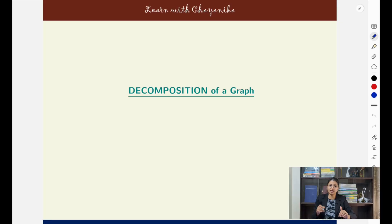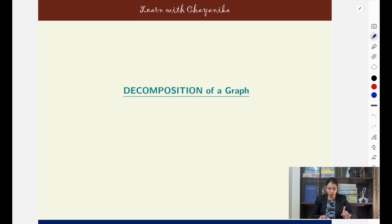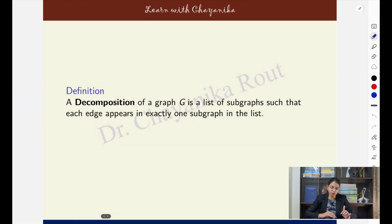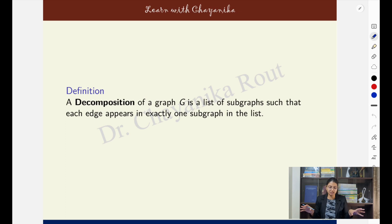So let's see the definition and some examples. A decomposition of a graph is basically a list of subgraphs such that each edge in the graph appears in exactly one subgraph in that list.